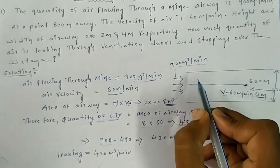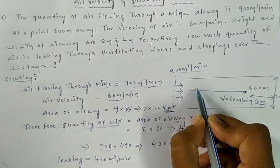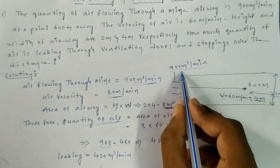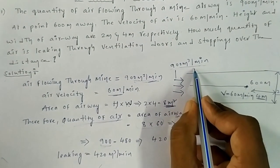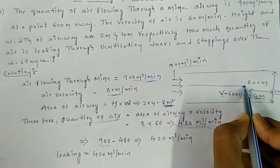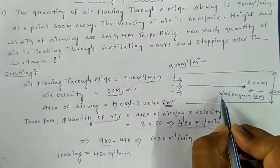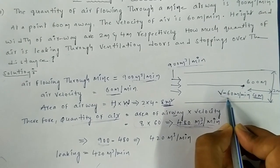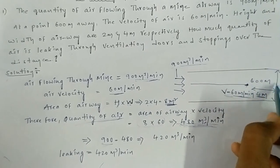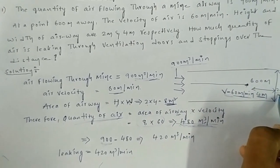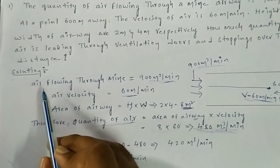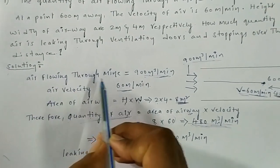Here in the figure we can see: the quantity of air flowing through the mine is 900 cubic meters per minute. At a point 600 meters away, the velocity of air is 60 meters per minute. The height and width of the gallery are 2 meters and 4 meters.